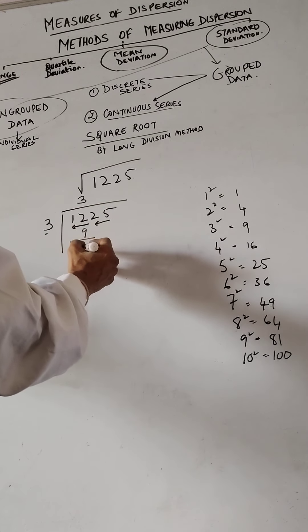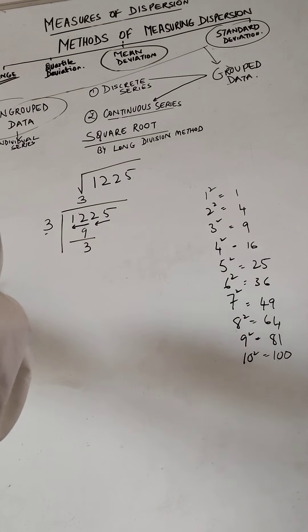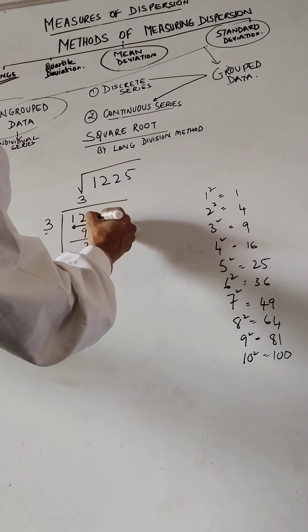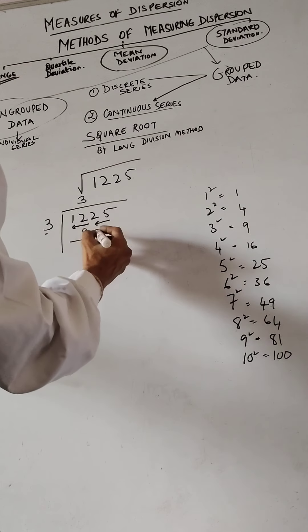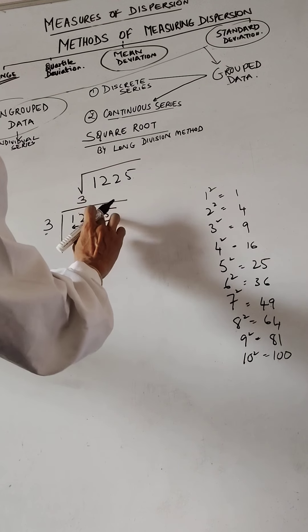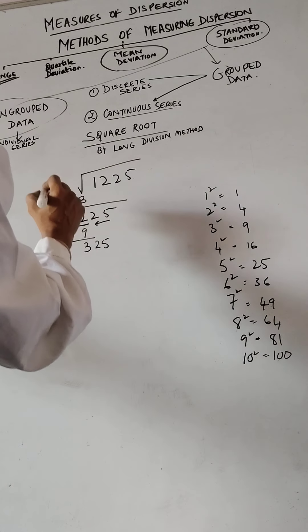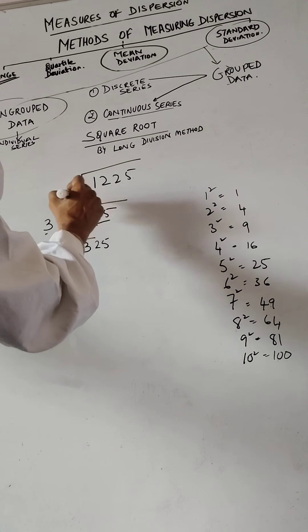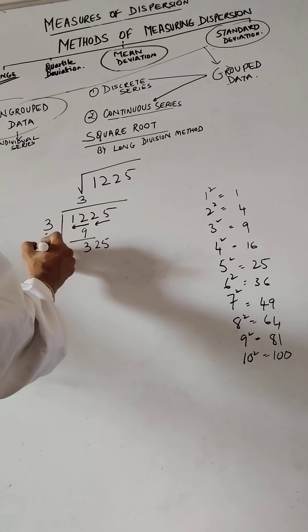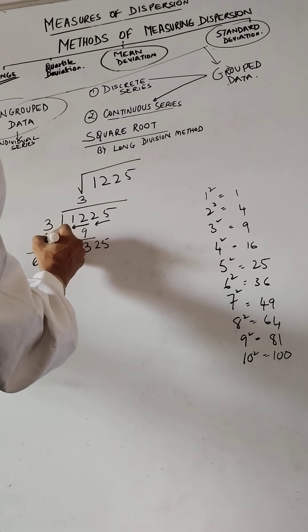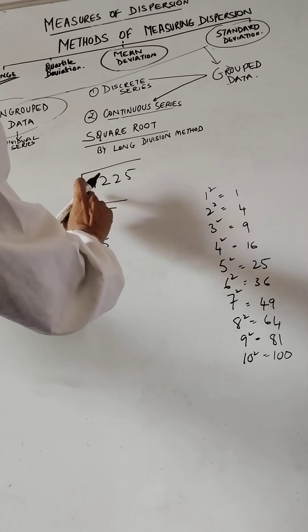12 minus 9 is 3. Now I bring down the next pair — not just one digit, I bring down 25. So I have 325. Next, I add the quotient to itself: 3+3=6. This becomes the new partial divisor base of 6. The original multiplication was 3×3=9.